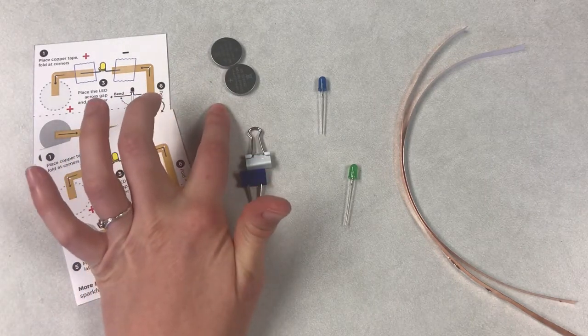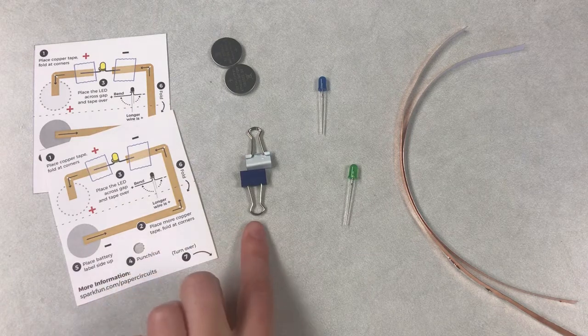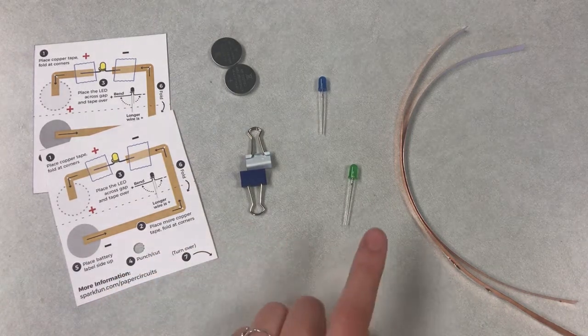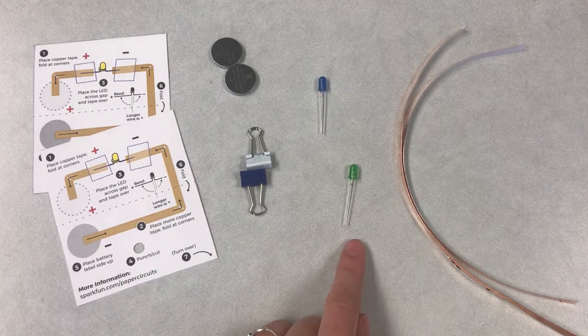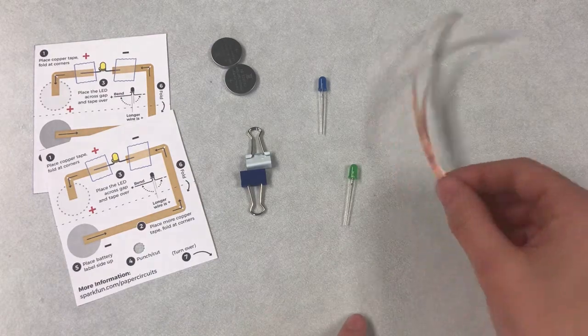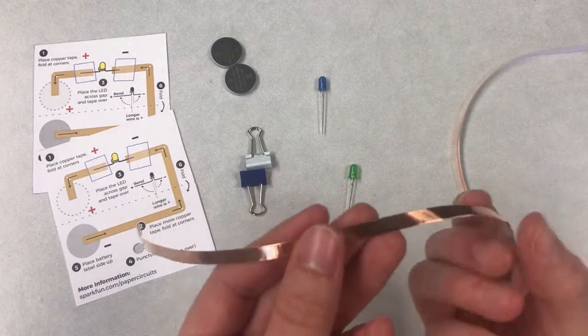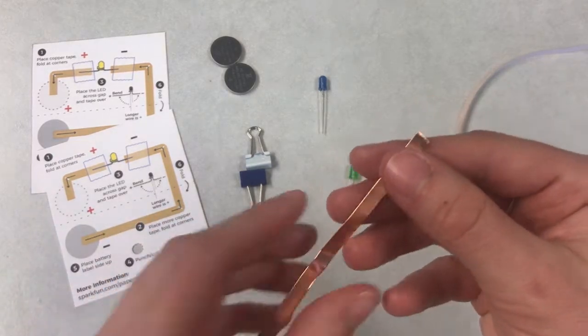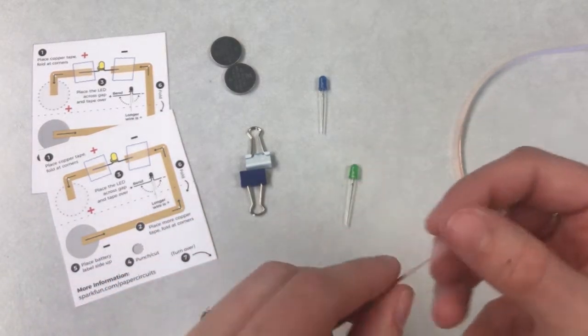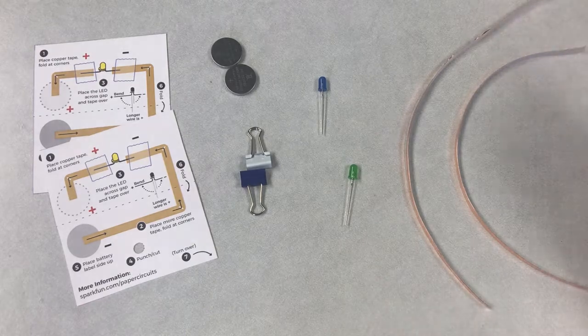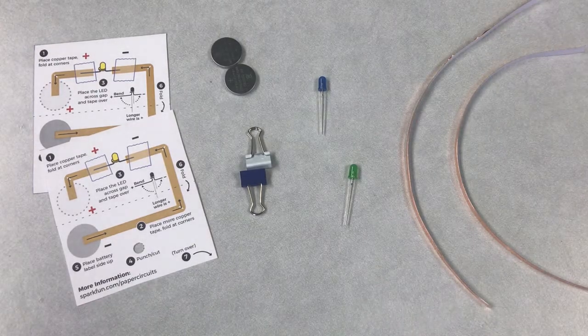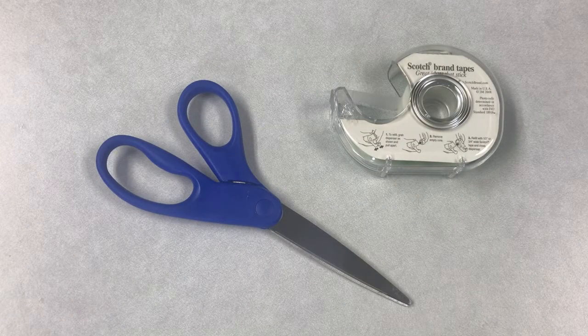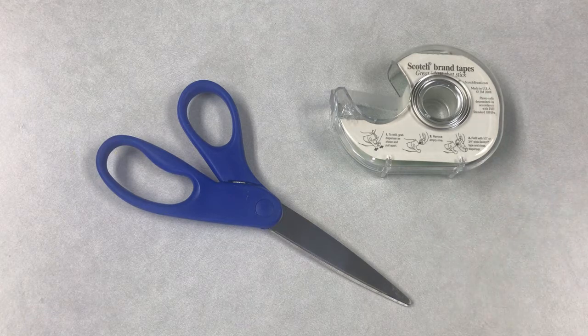You're also going to get two coin cell batteries, two little binder clips, two light bulbs, LED lights, and some copper tape. On one side, it's shiny copper, and then on the other side, it's got sticky tape so you can put that on your card. At home, you're going to need some scissors and some regular tape.